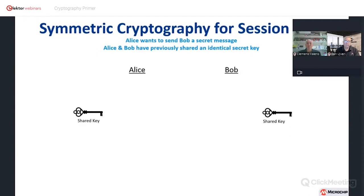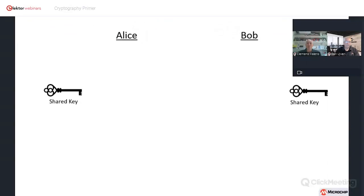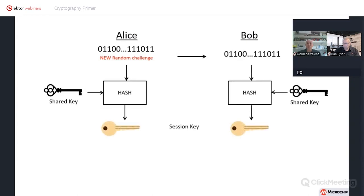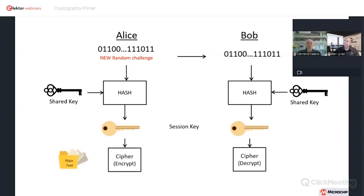Here's an example of how to create a session key using symmetric cryptography. Alice wants to send Bob a secret message. Alice and Bob have previously shared identical secret keys and know and trust each other. Alice sends a new random challenge — not the same one used during initial authentication. Both Alice and Bob take this random challenge and send it through the hash function. The output is referred to as a session key because they're about to use it with a cipher. They don't send this back and forth — they just keep it. They don't share it with anyone. Then Alice turns plain text into cipher text using the cipher algorithm, and Bob turns that cipher text back into plain text.